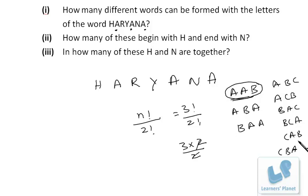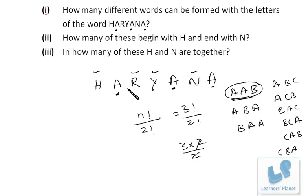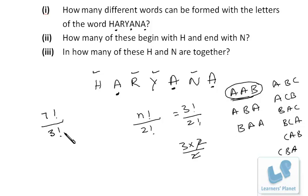For HARYANA: the letter A is repeated 3 times. The unique letters are H, R, Y, N, and A — giving 7 letters total. We arrange all 7 letters in 7! ways, then divide by 3! for the repeated A's. So the total number of different arrangements of HARYANA is 7!/3!.